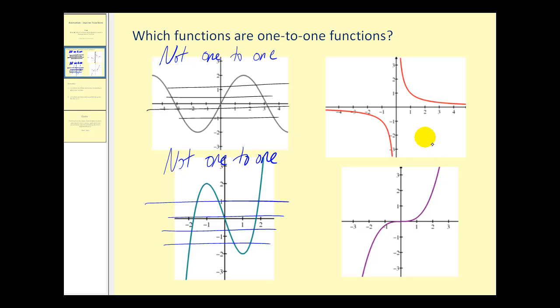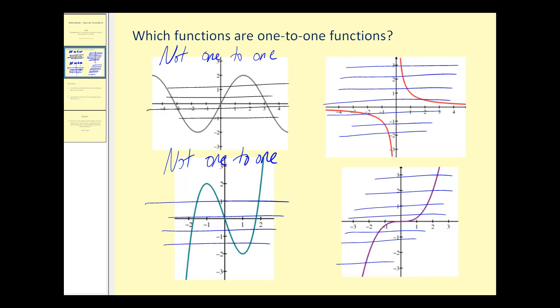These two on the right are one-to-one because horizontal lines never intersect the graphs in more than one point. So these are both one-to-one.